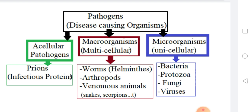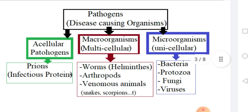Macro organisms are multi-cellular — the organism is composed of many cells. These include worms known as helminths, arthropods which are insects with jointed appendages, and venomous animals such as snakes, scorpions, and so on.